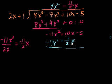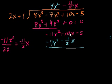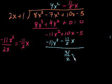Now we subtract this expression to get our new intermediary remainder. Minus 11x squared minus minus 11x squared is 0. Then 10x minus negative 11 halves x — subtracting a negative is like adding a positive — so that's 10 plus 11 halves, which is 20 halves plus 11 halves, that's 31 halves x. And when you subtract 0 from minus 5, you get minus 5.